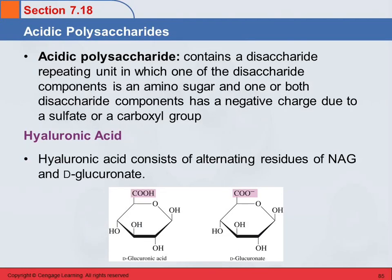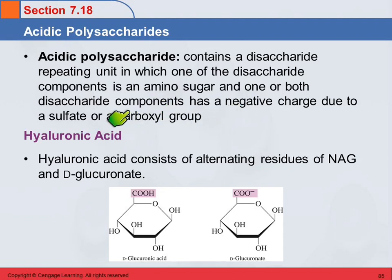The acidic polysaccharides are a little more complicated. These have a disaccharide component. One of those disaccharides is an amino sugar, and one or both of those components has a negative charge due to a sulfate or a carboxyl group.